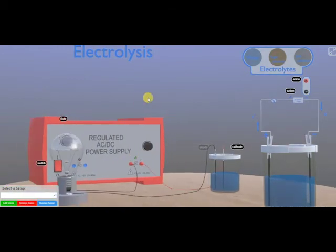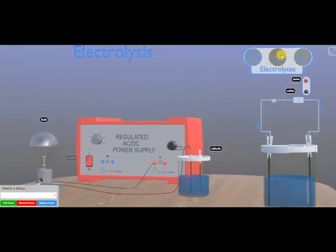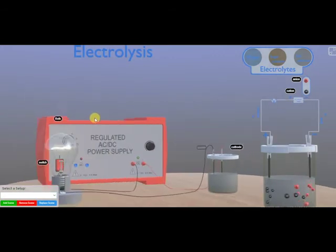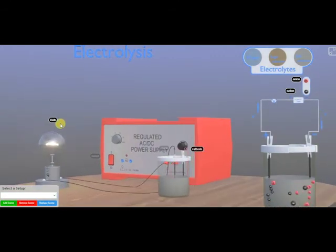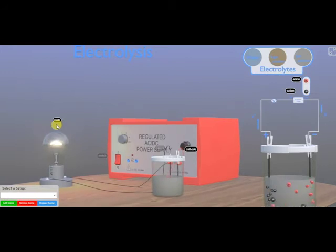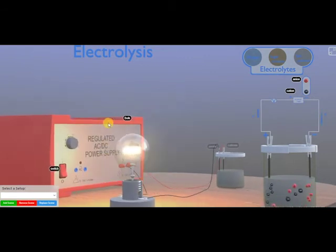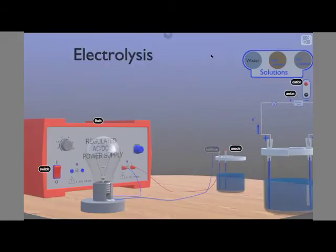Electrolysis is a word composed of two parts: electro, which stands for electricity, and lysis, which stands for breaking down. So electrolysis is a chemical reaction which uses electricity to break down substances. The setup you are seeing on the screen is for an electrolytic cell and it is used to carry out electrolysis.